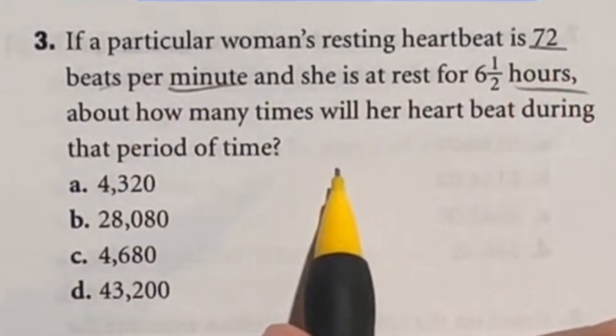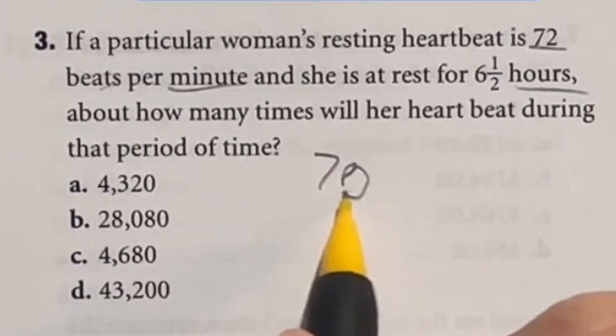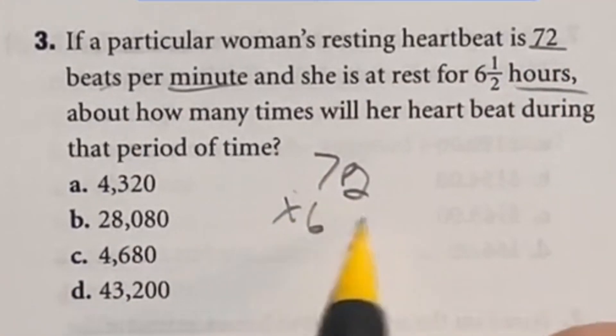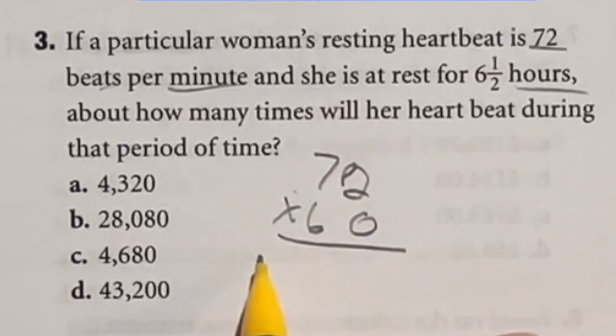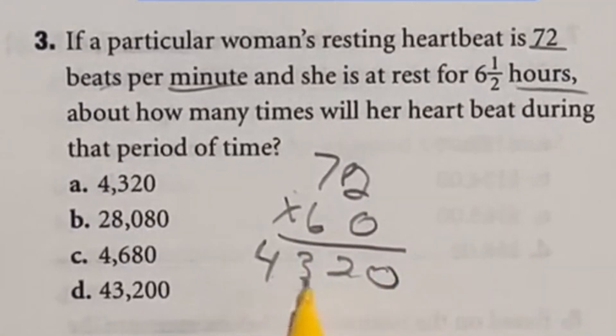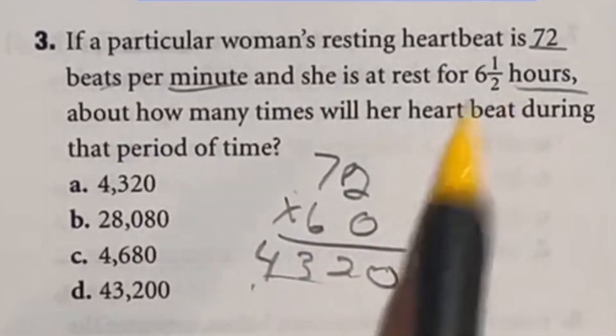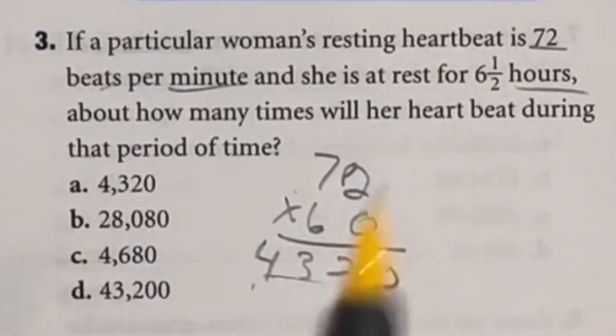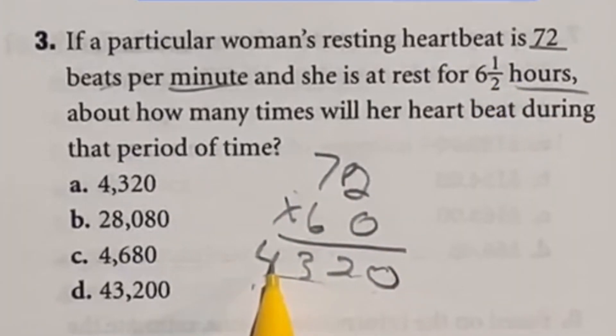So I'm going to do 72 times 60. Now 72 times 60 is going to end up giving me a total of about 4320. Just by doing the six times 72 would give me the 432 and then that zero will go here. So now we have how many beats per hour and we have six of these. Well right off the bat if I do six times the four here that's going to give me 24. So it's at least 24,000 and 43 seems way too high. So I'm going with answer B, 28,080.